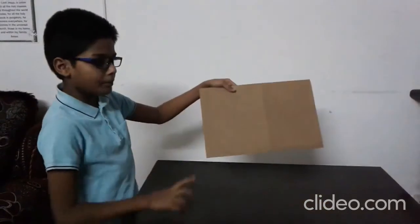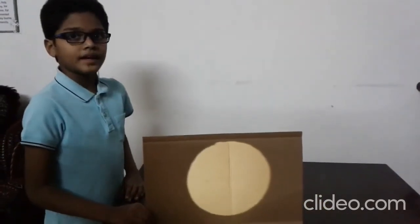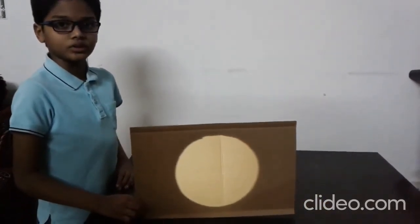Objects that do not allow light to pass through them are called opaque objects. For example, cardboard. Here the light does not pass through the cardboard.